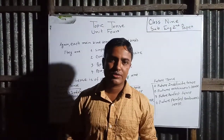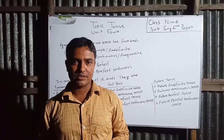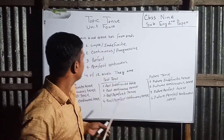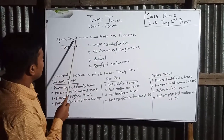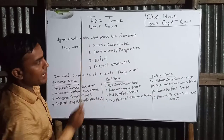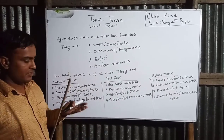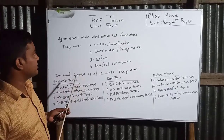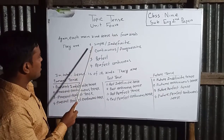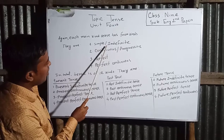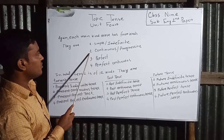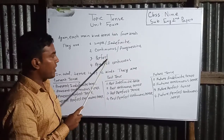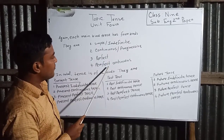We learned tenses are mainly three kinds. Now let's see another type classification. Each main kind of tense has four sub-kinds. They are: one, simple or indefinite; two, continuous or progressive; three, perfect; and four, perfect continuous.